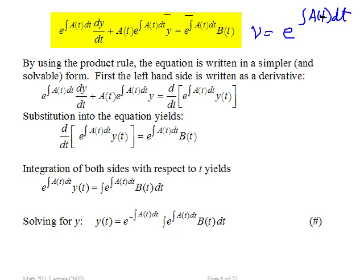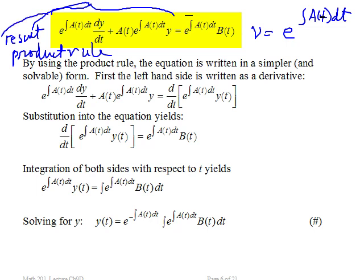Now look at the left-hand side. The whole idea here is this left-hand side is the result of the product rule for differentiation. In other words, this left-hand side, which is right here, is equal to d/dt of the product. So it is d/dt, the product of the integrating factor times Y.